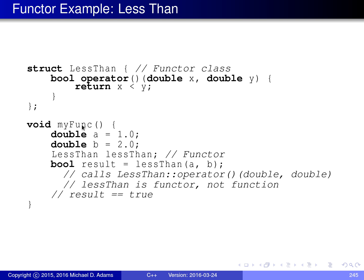You can see all the function is doing in its body is checking to see if x is less than y and returning the result as a bool. Below, we have a function called myfunc which makes use of our functor class. We create a double variable called a initialized to one, a double variable called b initialized to two, and then we create a functor called less_than of the class less_than. On the next line, we use the functor to compare a and b — to see if a is less than b. Now, this line of code looks like a function call operation, but it's not actually a function call because less_than is not the name of a function; it's the name of an object.